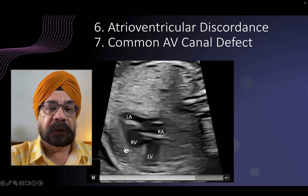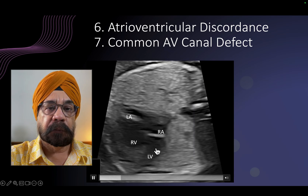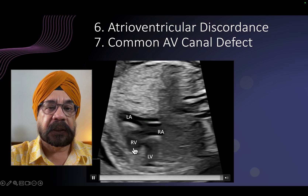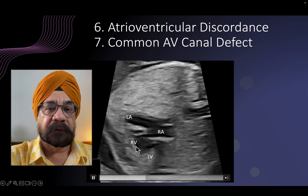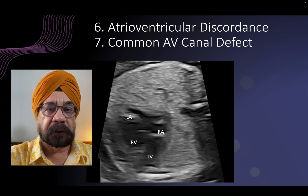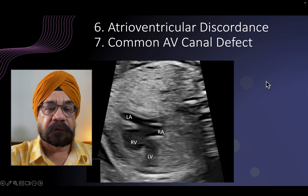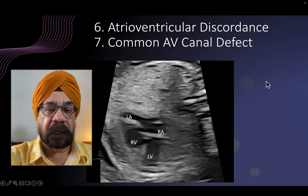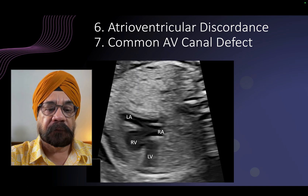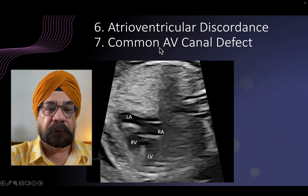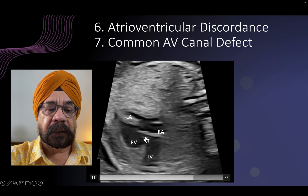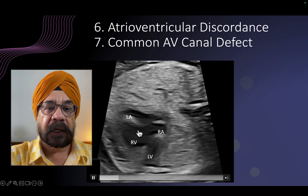The chamber the left atrium is connecting with is morphologically right ventricle. So this is the morphologically right ventricle, and this is the morphologically left ventricle. The left atrium is connected with the morphologically right ventricle, which is the hallmark of atrioventricular discordance — and this kind of arrangement happens in congenitally corrected transposition of the great arteries.